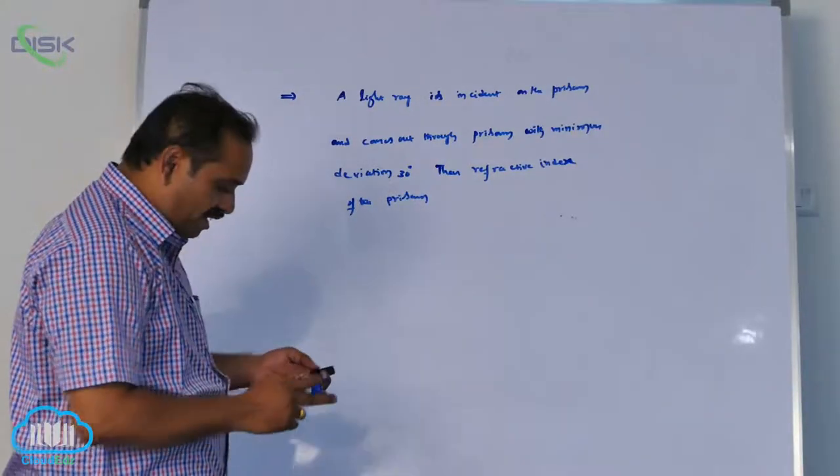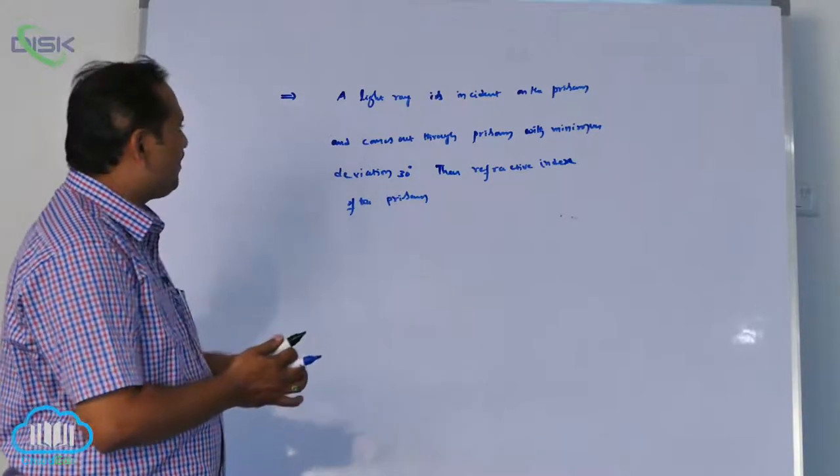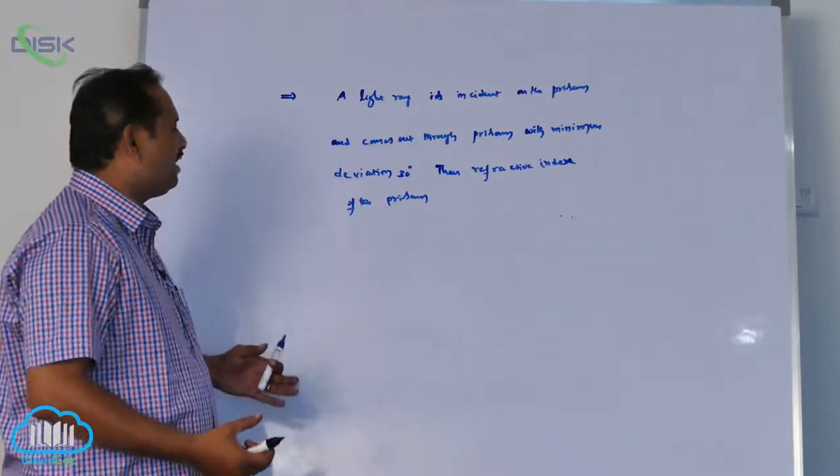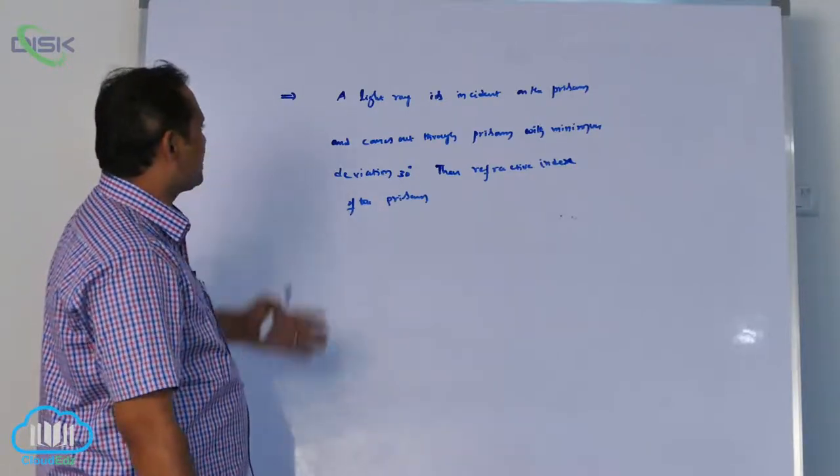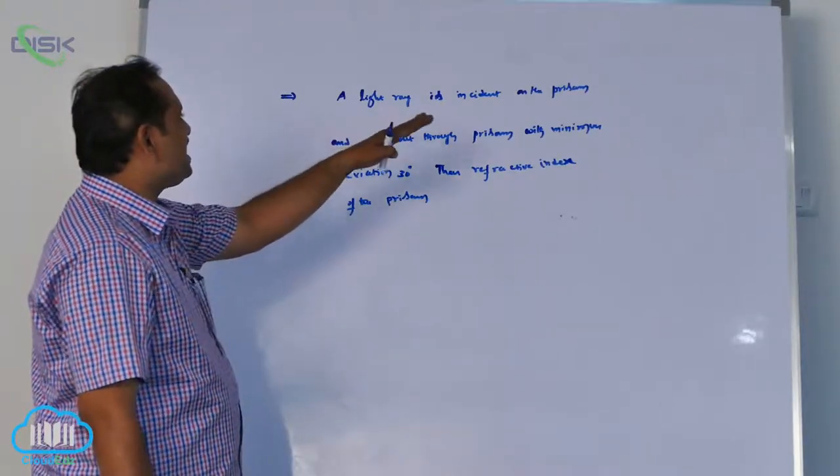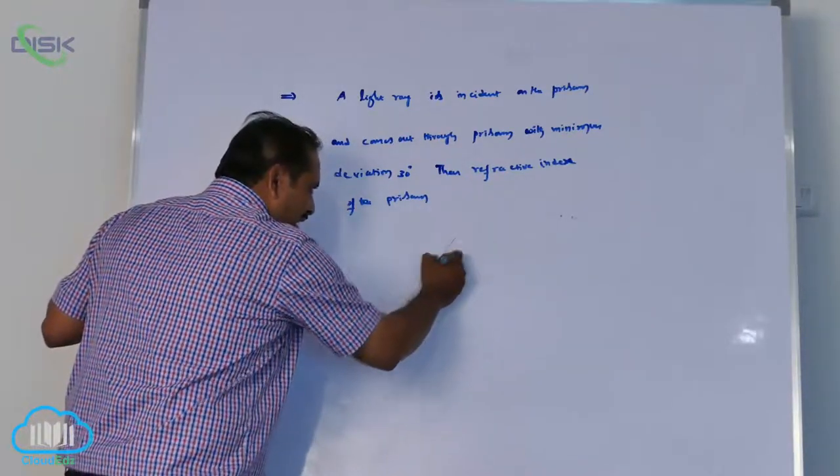Most people fear physics - first how to approach the problem if I am 11th or 12th class student? First I should understand the meaning of the question. What are they given? Light ray is incident on prism - first I have to know the diagram of prism.